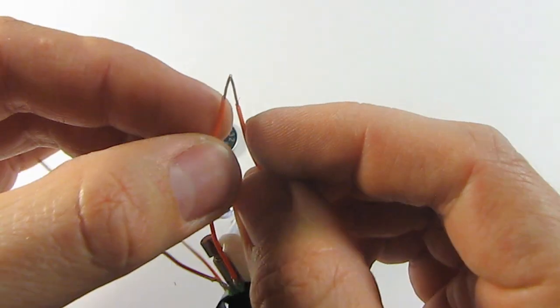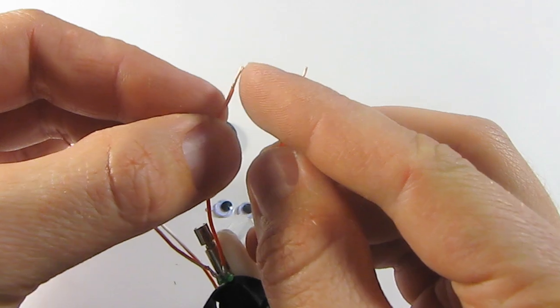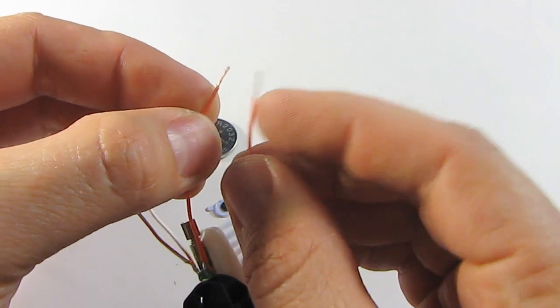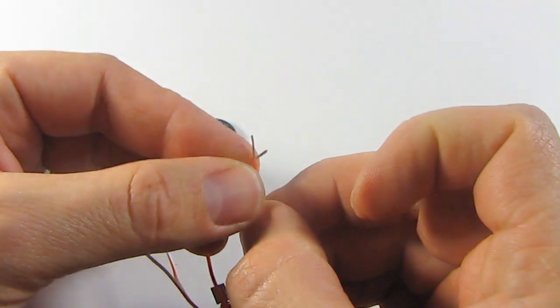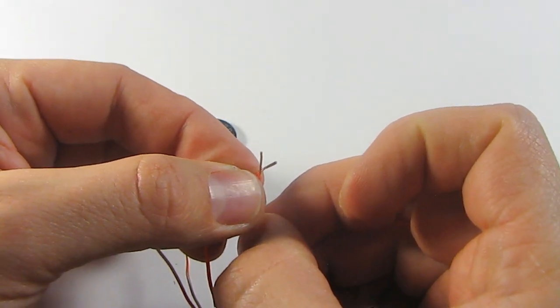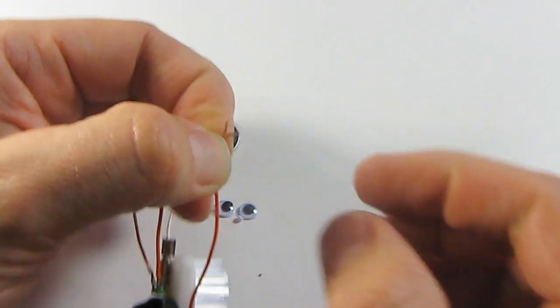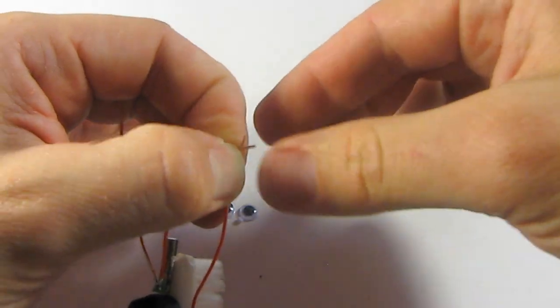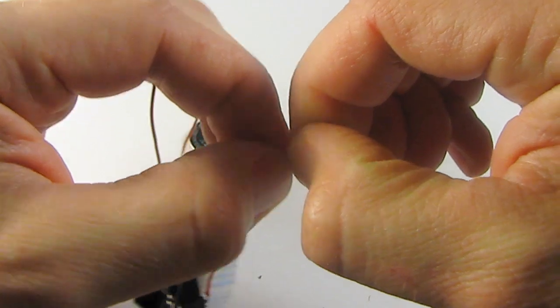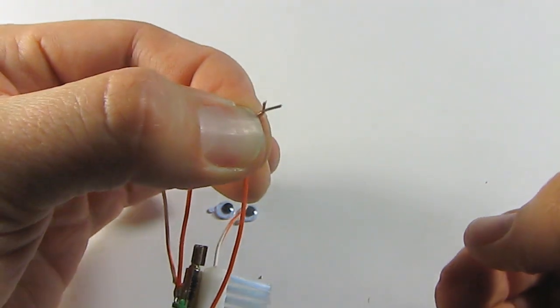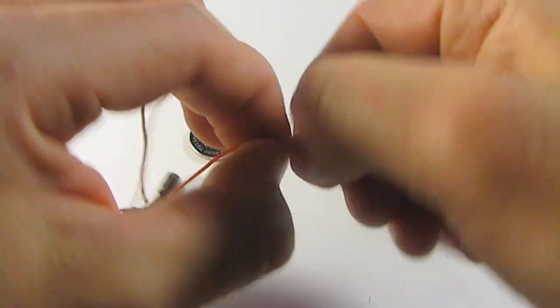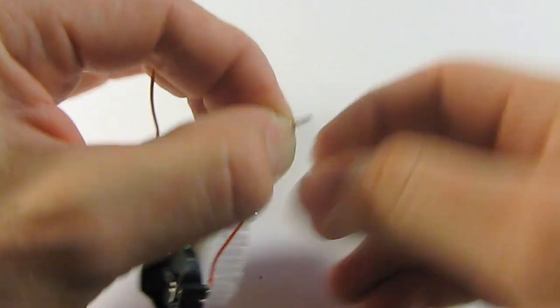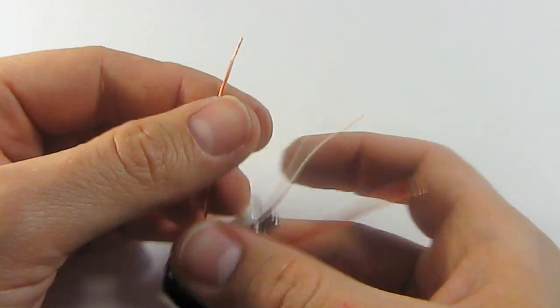All you want to do is make an X with them right where the insulation starts or ends. Make an X and hold it, then you grab the X and just give it a twist like that. Keep twisting, twisting, twisting till it's together.